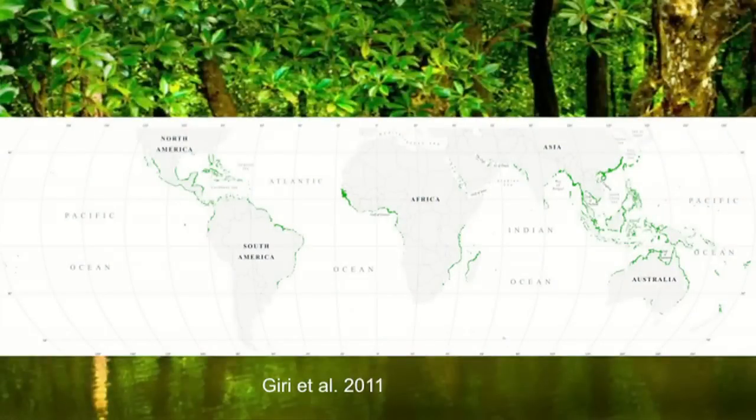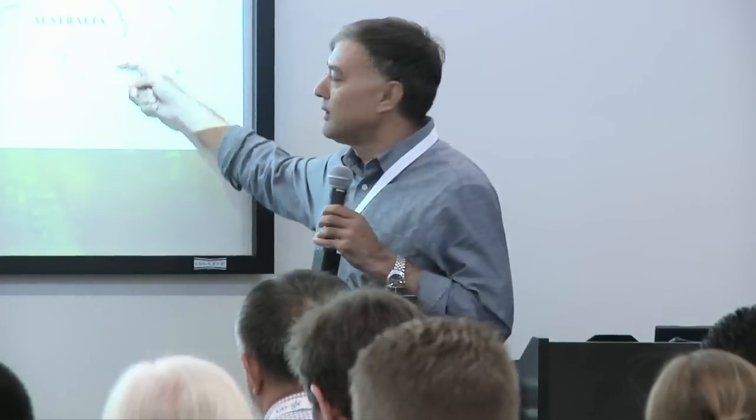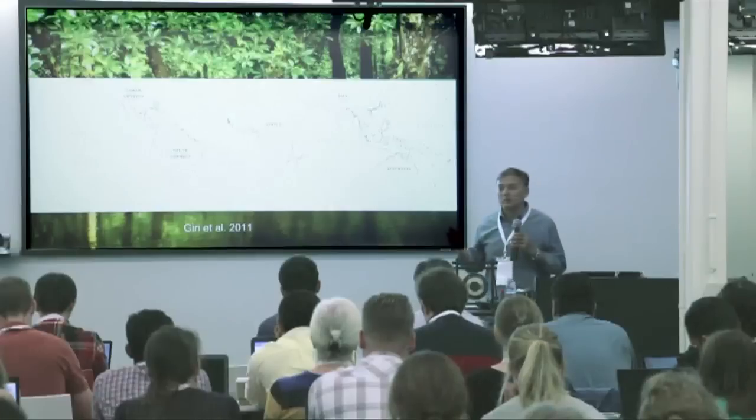When you map these areas, what you used to do is download the full Landsat scene. In some areas, only 10% of the Landsat scene contains mangrove, so it was so much work — downloading all the Landsat scenes, subsetting those small areas, classifying, and so on. So we've been using Google Earth Engine so that we don't need to download each individual Landsat scene. This global data is also available from Earth Engine.